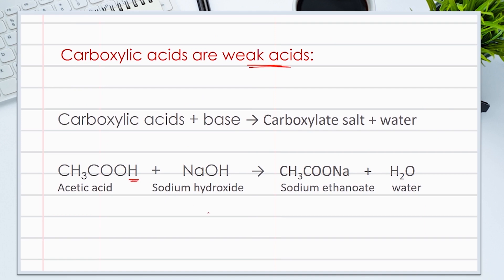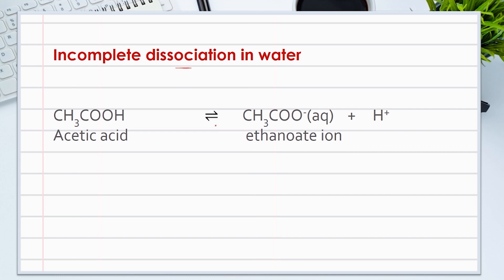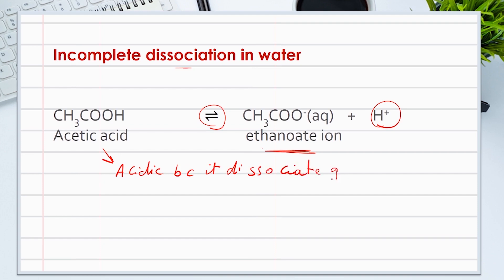Carboxylic acids react with bases to give carboxylate salt and water. Here is the equation of the reaction of acetic acid with sodium hydroxide to give sodium ethanoate and water. To understand the acidity of carboxylic acids, let's look at the acetic acid dissociation in water to ethanoate ion. The reaction is at equilibrium, which means not all acetic acid molecules dissociate. This ability to lose a proton of the carboxylic group is what we call acidity. It is a weak acid because the Ka value is low.